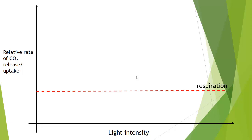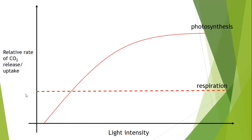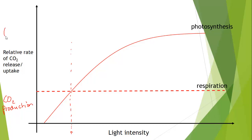Let's say that this is the rate of respiration — we take it as a flat rate regardless of light intensity. The y-axis shows the relative rate of CO₂ release or uptake. For respiration, we're talking about carbon dioxide release, and that doesn't change with light intensity. Now let's put photosynthesis onto this graph. At low light intensities there is no photosynthesis, but as light increases, its rate climbs. At light intensities lower than a certain point, we have overall CO₂ production; above that dividing line, we have CO₂ uptake.